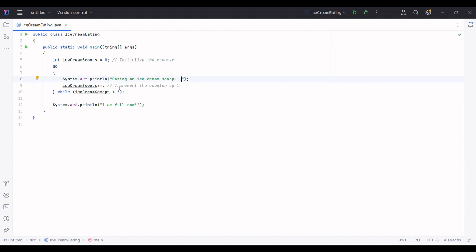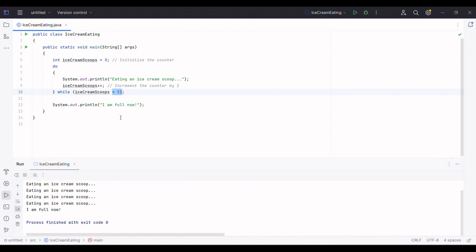This continues until the condition becomes false. When we run this code we'll see the kid eating ice cream until they have eaten a total of five scoops. So the result is as expected.